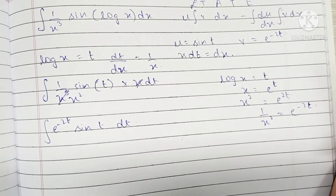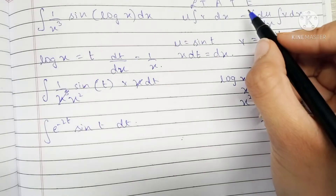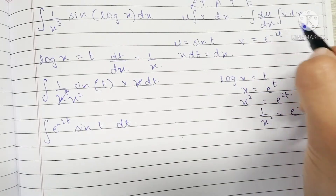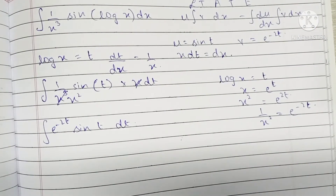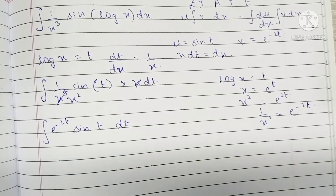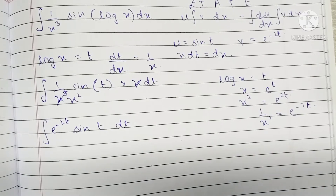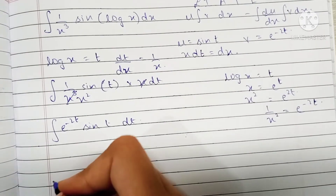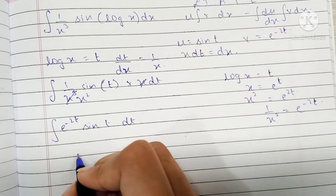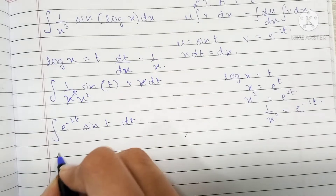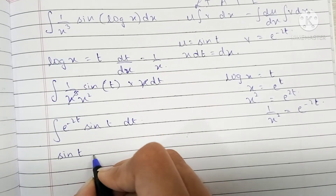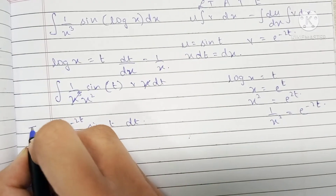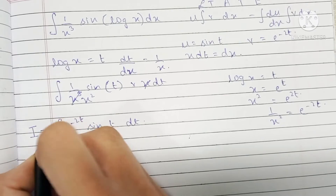If you're not completely sure about how to use the LIATE rule and the formula, you can check out my video which I'll be linking in the description box and at the end of the video. Now let's substitute this in the formula. I'm going to place this integral as i and find the value of i by solving it.